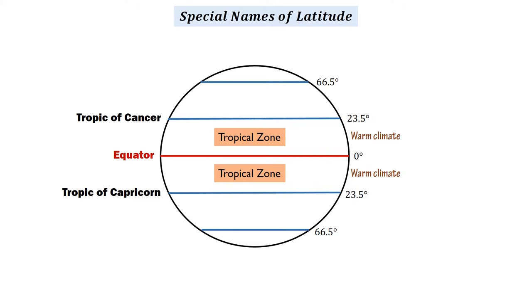On the other hand, the Arctic Circle is located at 66.5 degrees north, and the Antarctic Circle is at 66.5 degrees south. The zones between the Tropic of Cancer and the Arctic Circle in the Northern Hemisphere and the Tropic of Capricorn and the Antarctic Circle in the Southern Hemisphere are called temperate zones.